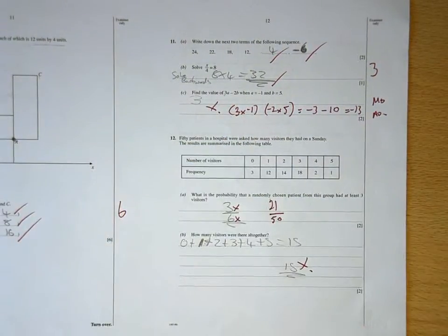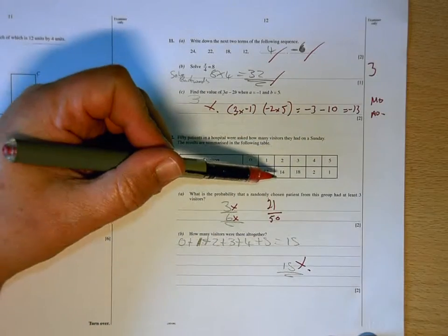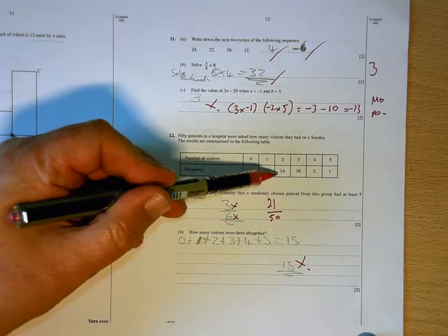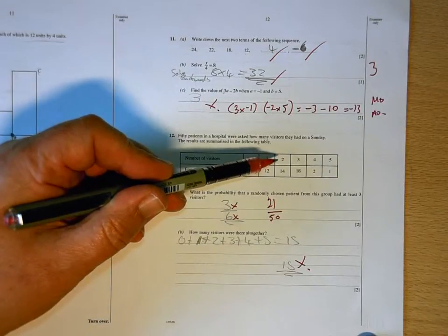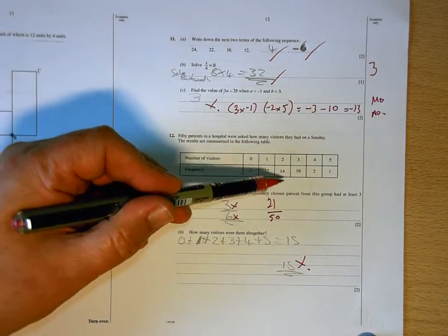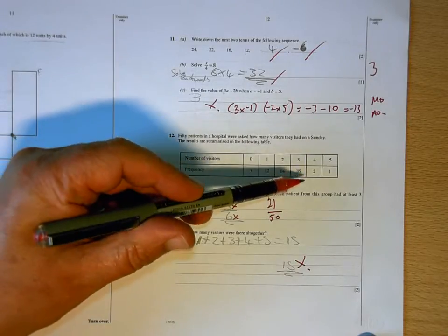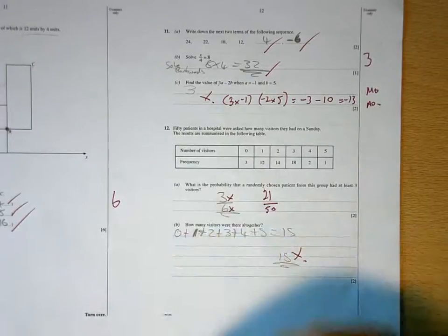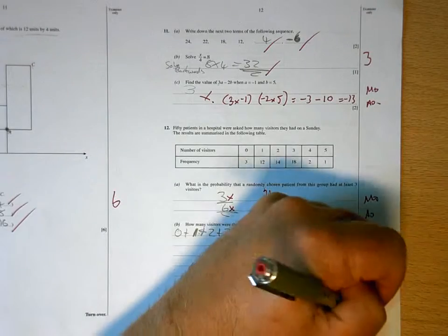And then, this one's wrong with you as well. Here, again, if you look at how the table is or what the table is telling you, that one column there is saying that there are 14 patients who each had two visitors. So, there are 28 visitors in total in that column. So, you've got to then work out how many in total in the other columns and add them together. So, you're going to get no marks for that question. Total for the page, nine.